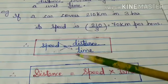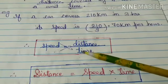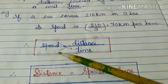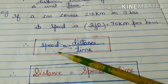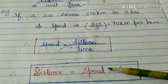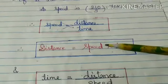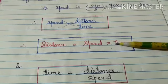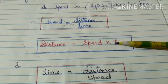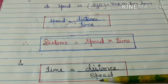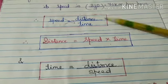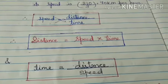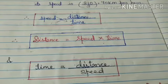From this example you can understand that speed equals distance divided by time. From this formula we can also find that distance equals speed multiplied by time, and similarly time equals distance divided by speed. These are the formulas you will require to solve these questions.